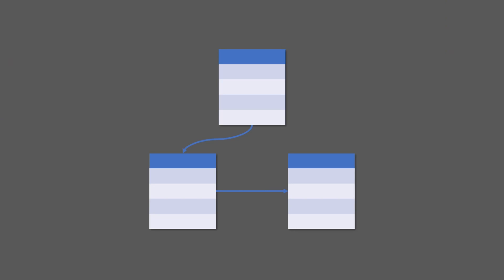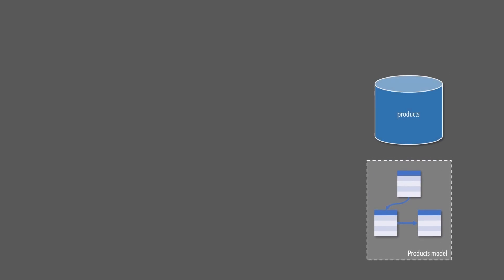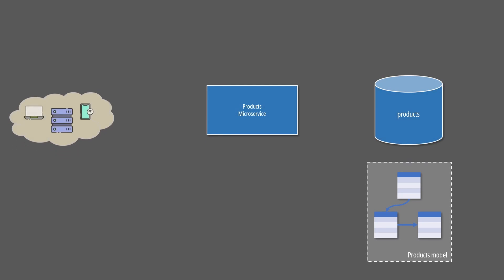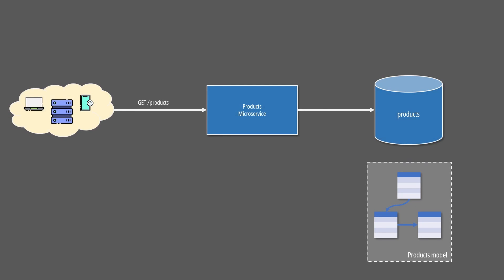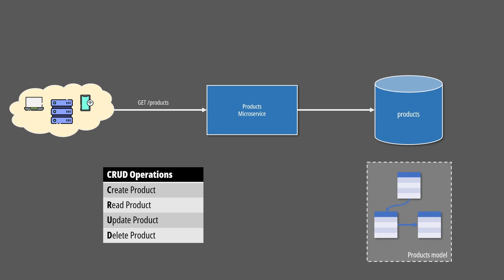Whether we are designing a simple application or a large microservices architecture, we usually design one data model per component. The model is persisted on a database of our choice and its data is used to support all service operations, which are usually exposed over RESTful APIs. This approach works well for most scenarios, especially those when we can easily map our feature set to simply create, read, update and delete operations.